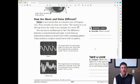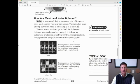You can use an oscilloscope to see the difference between a musical sound and a noise. A note from an instrument produces a sound wave with a repeating pattern. Noise produces complex sound waves with no pattern. So here's an example of a piano playing a note. See how it's repeating the pattern? Down here is just someone making a clap. Just random, no pattern. So that gives us the difference between a noise and music.